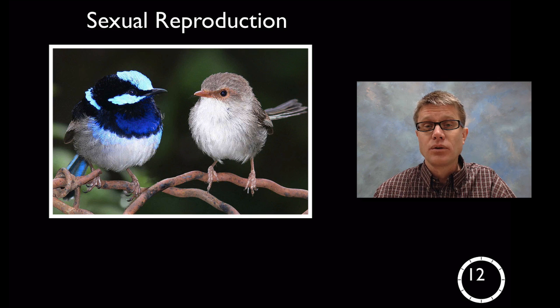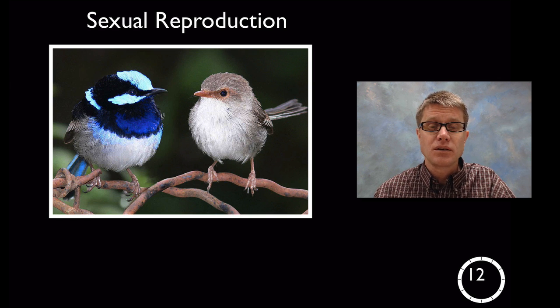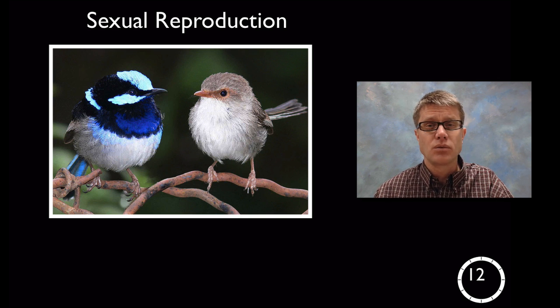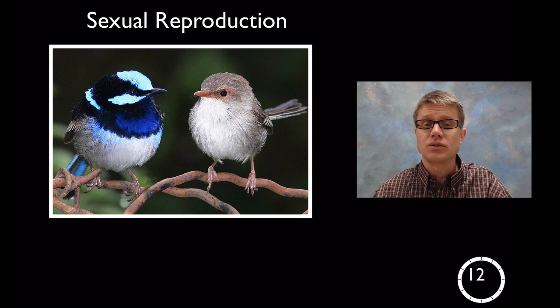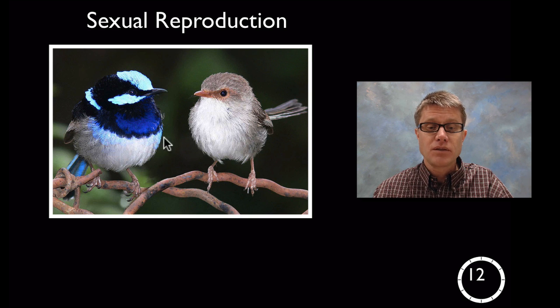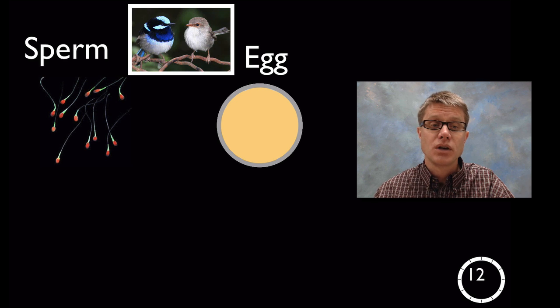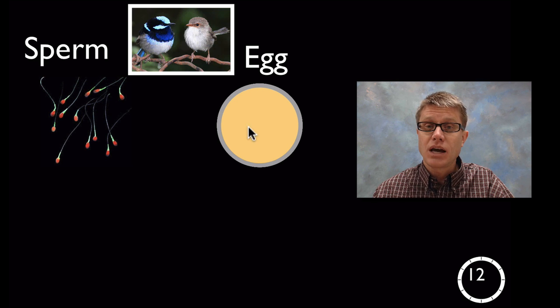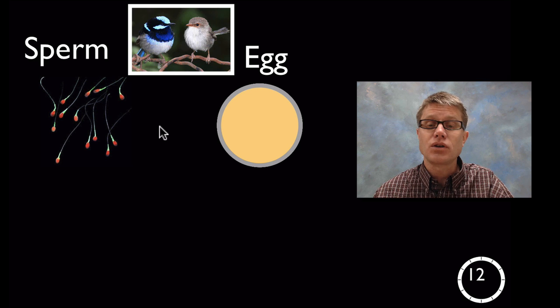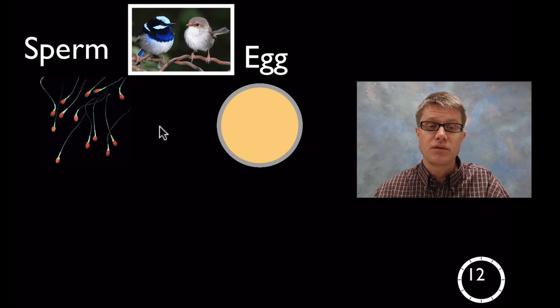As we move into high school then we can start talking about the specifics of sexual reproduction. How this actually works. And that's where we're going to talk about mitosis and meiosis. And so if we have these two birds right here, how do they sexually reproduce? Well the mother is going to produce an egg and the father is going to produce sperm. And they're going to transfer that sperm from the male to the female.